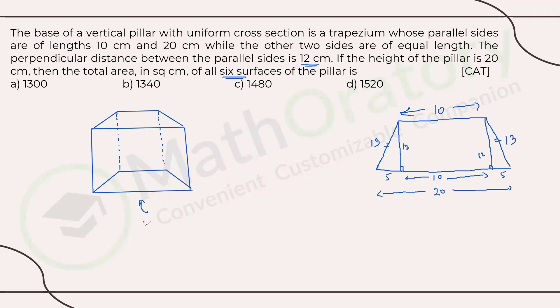What will be the total surface area? We have the base area here. Since it's a uniform cross section, that will also have the base area at the top. And what about the lateral surfaces? This surface will be a rectangle having one side as the height of the prism and another side as this side of the trapezium. Height of the pillar is known to us, 20. So this will be 20 multiplied to this particular side.